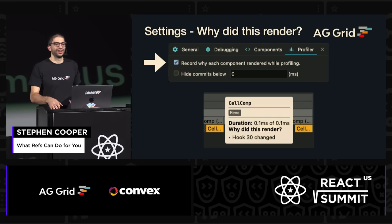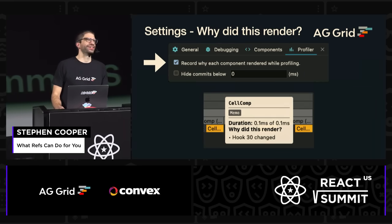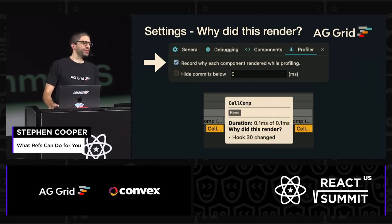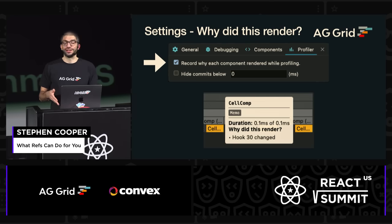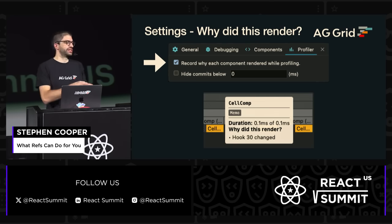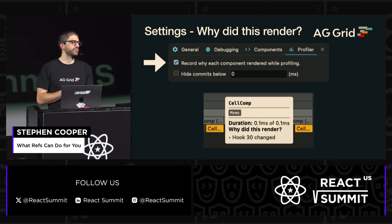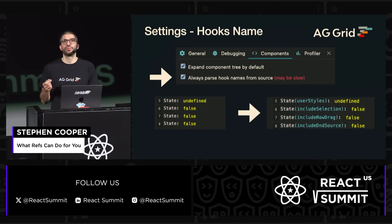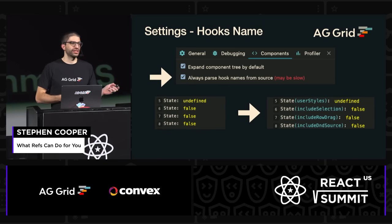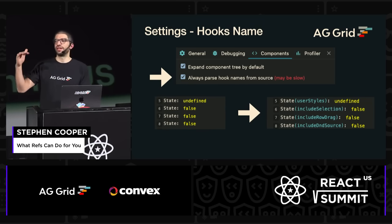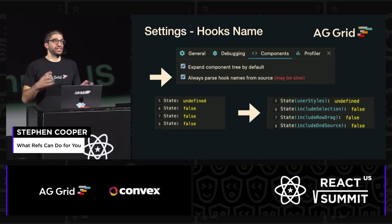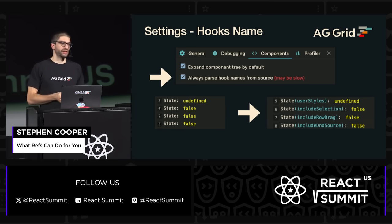While we're looking at the profile, there are two settings which I think are very, very important. Recording the component why it is actually re-rendered — this is telling you it's the cell component and it was hook 30 that changed. And there's another setting under the components panel where it can parse the hook names, so instead of having undefined false, false, false, it actually gives you the names that you used in your code. These are just small things which can make debugging these issues so much easier.